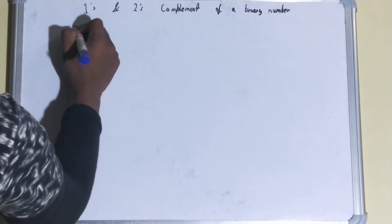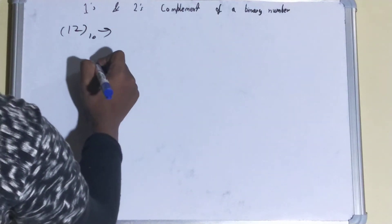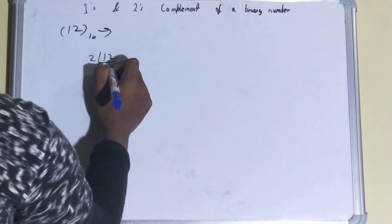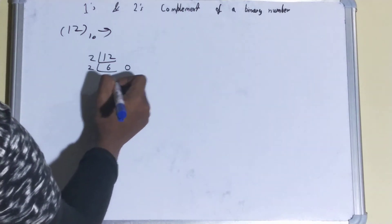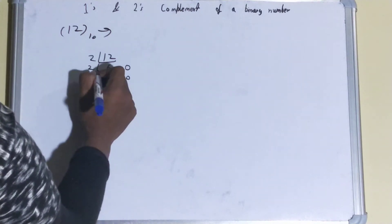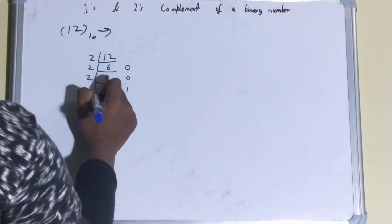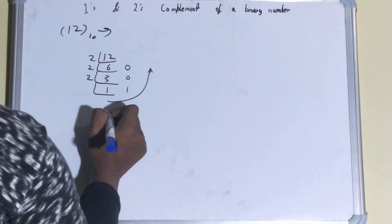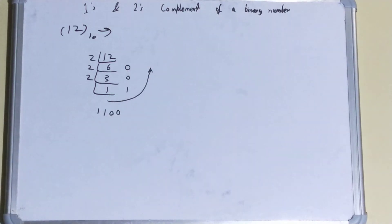For example, there is a decimal number 12 (base 10) and you need to find out the binary equivalent. You do it by dividing by two: 12 divided by 2 gives quotient 6, remainder 0; then 6 divided by 2 gives quotient 3, remainder 0; then 3 divided by 2 gives quotient 1, remainder 1; then 1 divided by 2 gives quotient 0, remainder 1. So the binary equivalent is 1100.